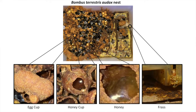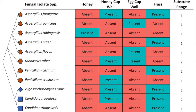We wanted to see what microbes and fungi we would find in these commercial nests if we were to just basically crack one open and take a look. So what we did was we sampled a little bit of honey, some wax from the egg cups, some wax from the honey cups, and some frass from each colony. We did about 0.5 milliliters worth of honey and one to two centimeters cubed of the wax and frass samples. Each sample was then placed in a petri dish with an agar mix optimized to mold, yeast, and fungi, and left to incubate for six days.